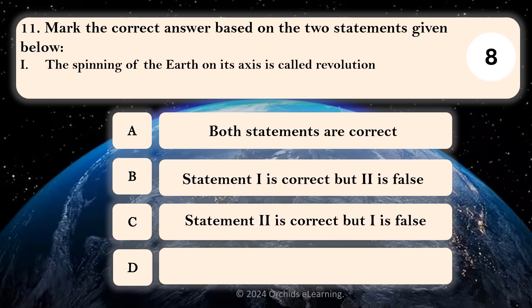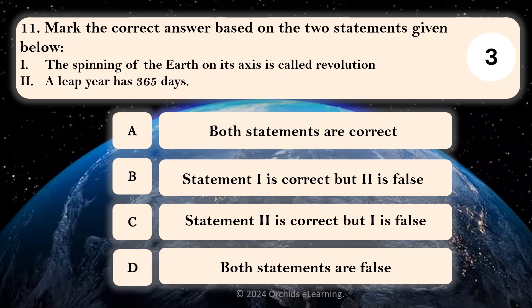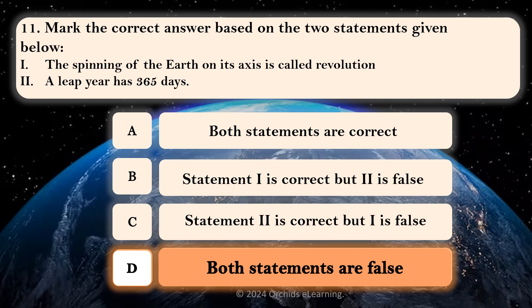Statement 1: The spinning of the Earth on its axis is called revolution. Statement 2: A leap year has 365 days. Both statements are false.